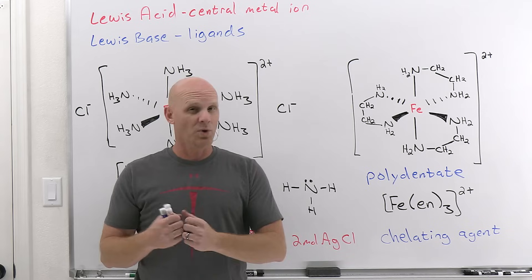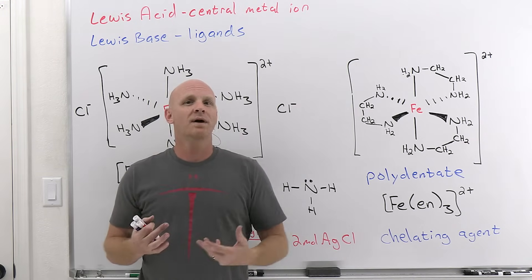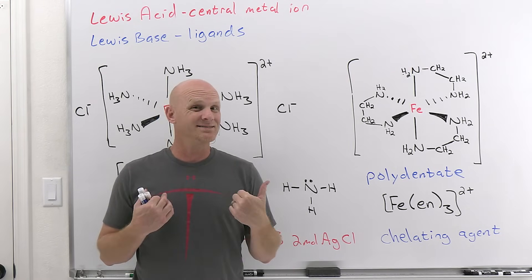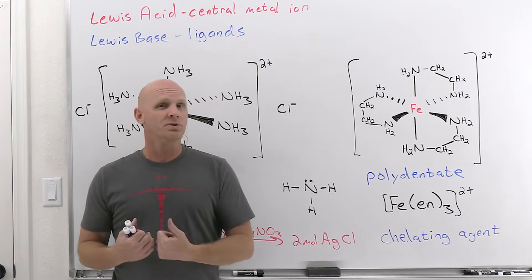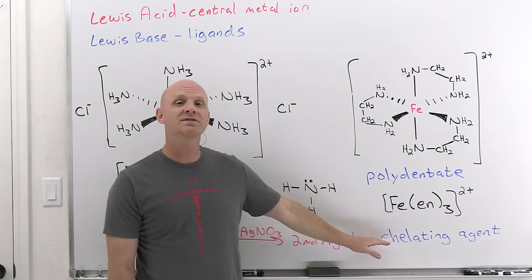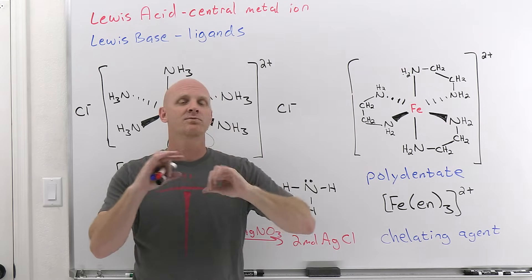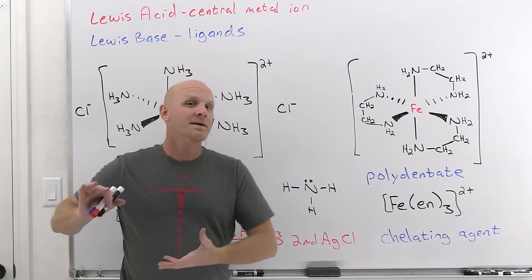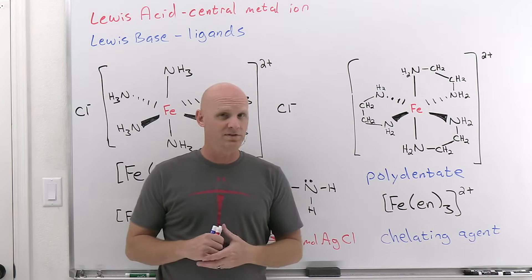Chelating agents are important for a couple of reasons. One example: if you get heavy metal poisoning — say lead poisoning — lead tends to bind very strongly to your proteins in an irreversible fashion. Once poisoned by lead, you're probably going to stay poisoned and suffer serious irreversible harm. However, if shortly after getting lead poisoning they give you a chelating agent, it will start binding to those lead ions before they have a chance to bind to your proteins, and since they're not strongly bound to your body, the lead might actually get passed through your system.